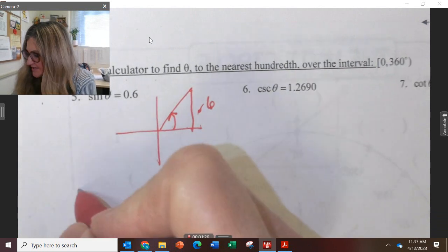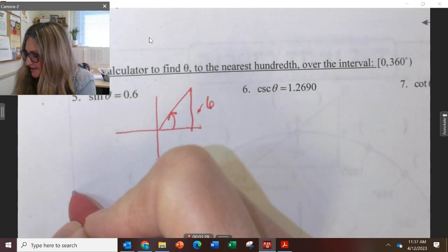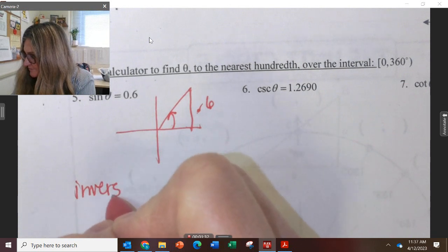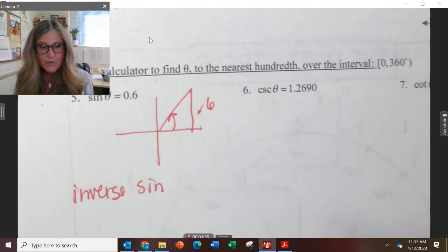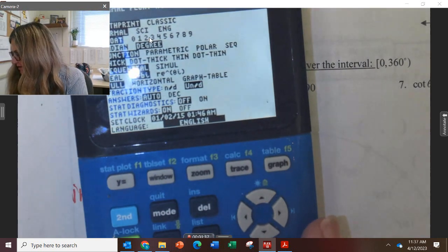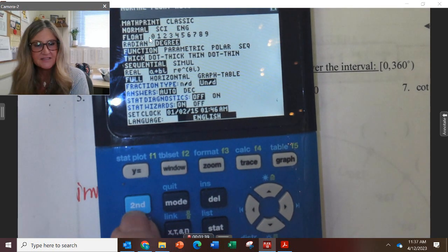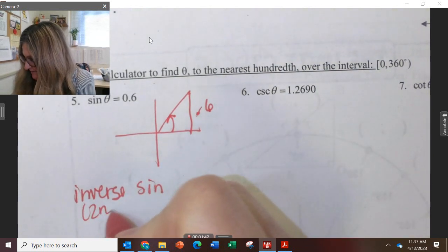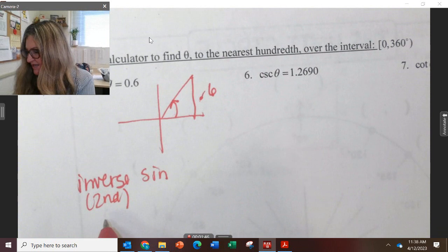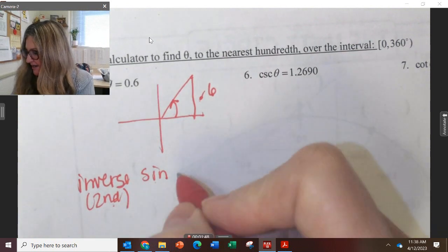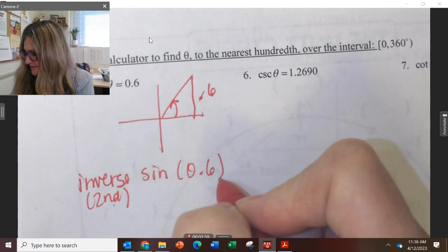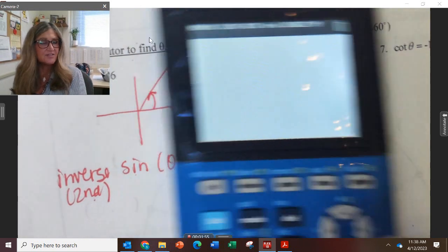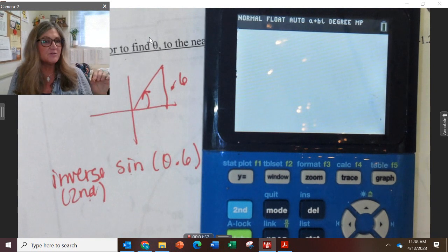So the way that we solve this is we have to push inverse sine. That's what we push on our calculator. The inverse button is this second key, so it's going to be the second that we're going to push. So we type in second sine of 0.6.